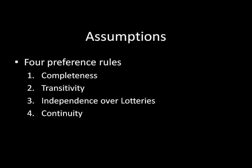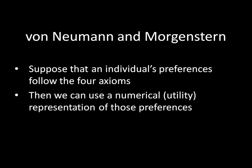Now it's time to see what we can do with that. Suppose that an individual's preferences follow those four axioms. Then we can use a numerical or utility representation of those preferences. This result is pretty old — it dates back to 1947, slightly earlier than John Nash, and was found by Von Neumann and Morgenstern. That's why expected utilities are often called Von Neumann-Morgenstern expected utilities.